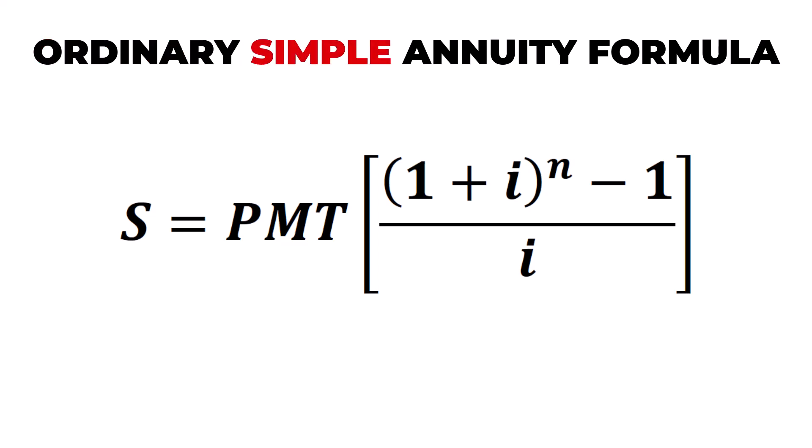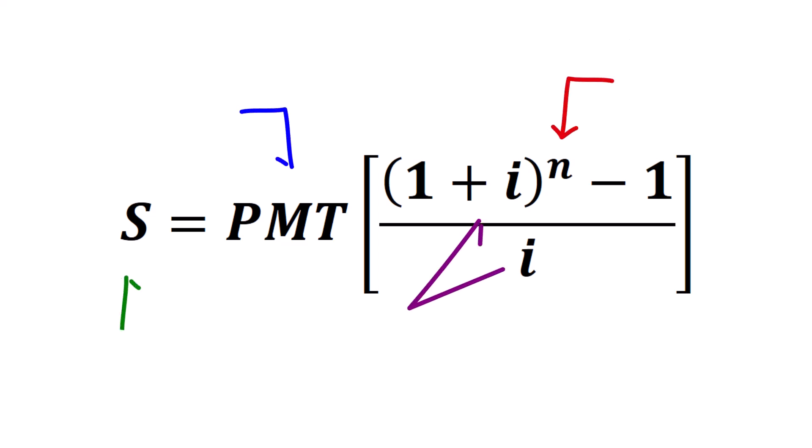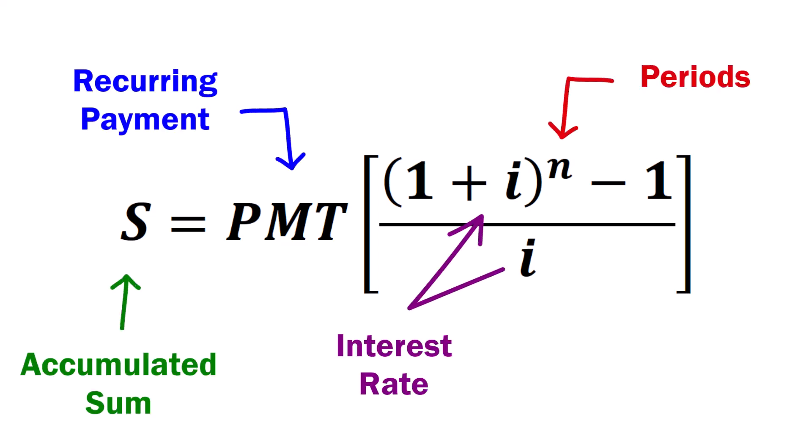What makes the annuity simple is that the interest compounding period corresponds to the cash flow frequency. For example, if you're paying into an account monthly, the interest would have to be compounded monthly. To understand how this formula is derived, we first must understand what it does and how it works.